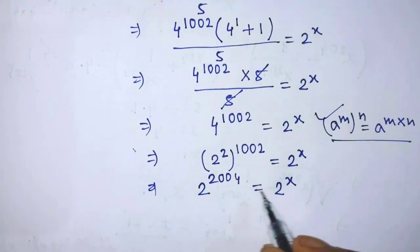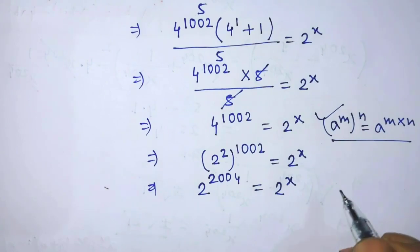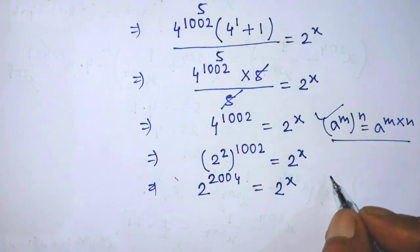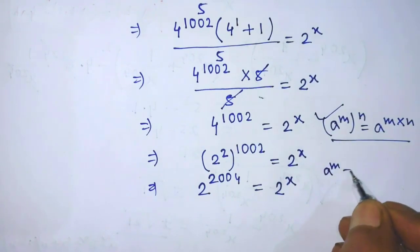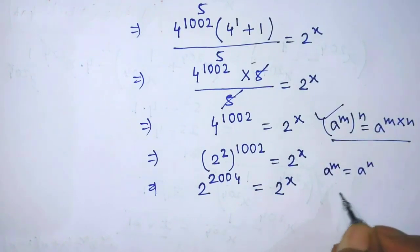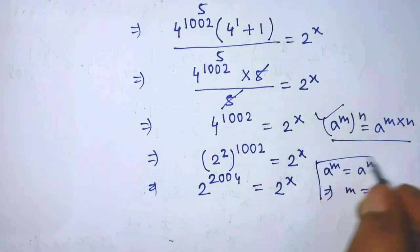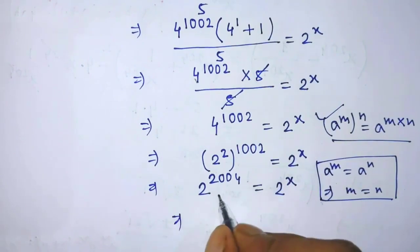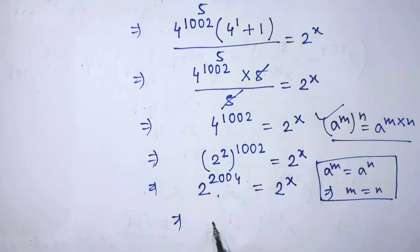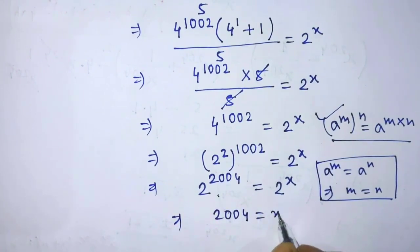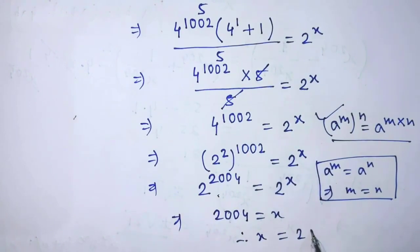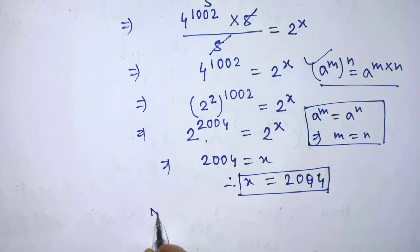In this equation, on both sides, the base is the same. So we can apply the formula: a to the power m equals a to the power n implies m equals n. Canceling the base 2, the power 2004 is equal to x. So the value of x is 2004, but we have to find the value of x to the power x.